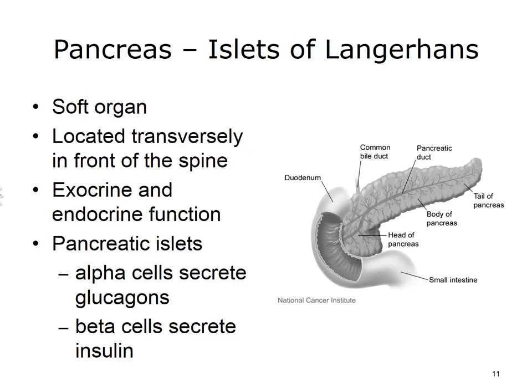The pancreas is a long, soft organ that lies behind your stomach and in front of your spine. As one of the endocrine glands, it is responsible for making insulin and producing enzymes that assist the body in digestion. Because this gland also releases digestive enzymes carried through a duct into the duodenum, it is also referred to as an exocrine gland — defined as a gland that produces and sends its chemicals using a tube or duct. The endocrine function takes place in the pancreatic islets, which secrete glucagon and insulin.